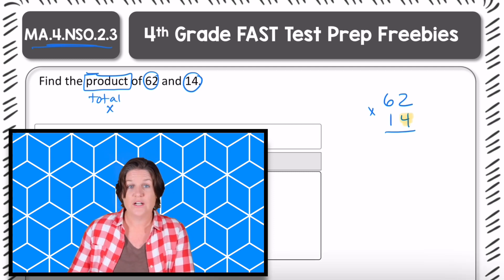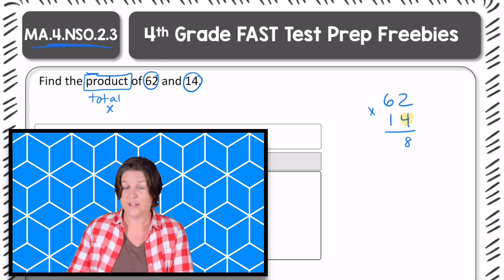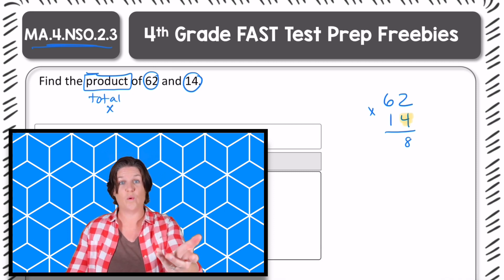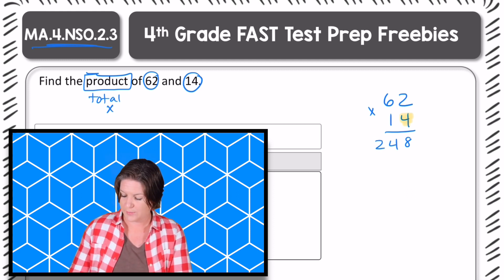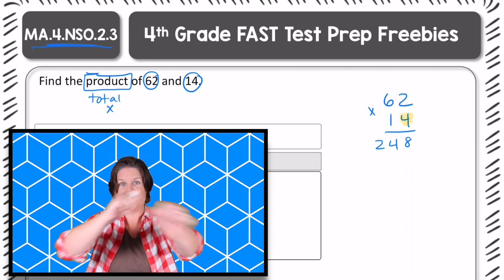So the way that I do that is four times two is eight. And four times six is what? 24. So the 24 comes down because that's our last digit there in the tens place.